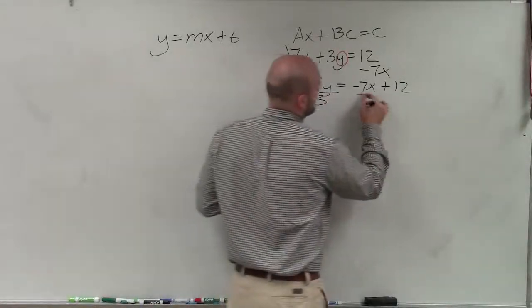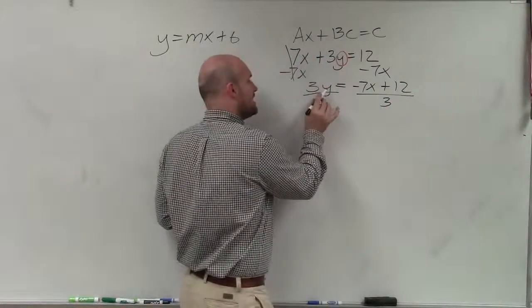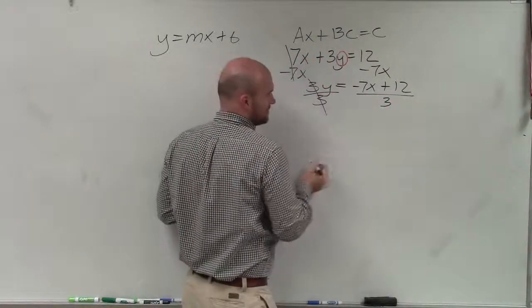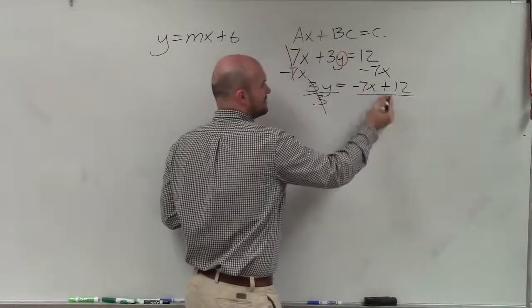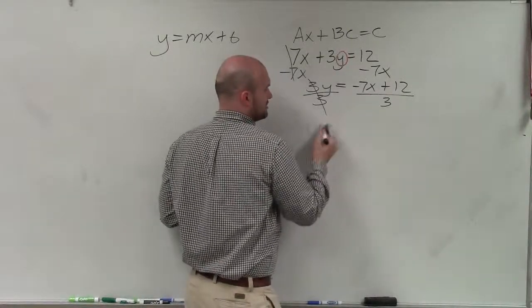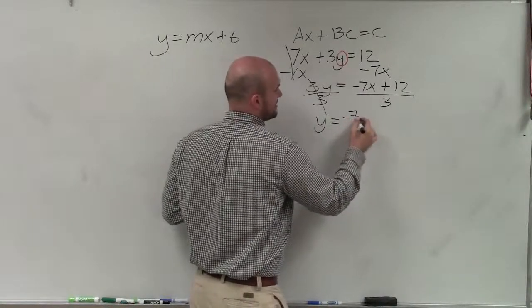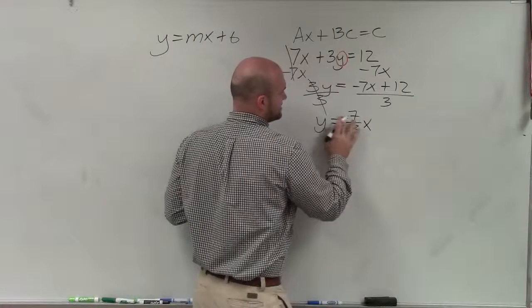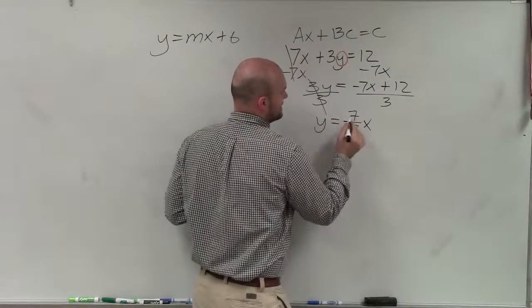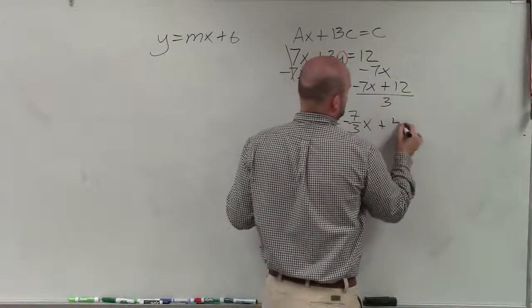Then I'll divide by 3. And remember, when we're dividing, my variable is multiplied by 3, so I divide by 3. This 3 has to divide into both these terms. Then I have y equals negative 7 thirds x, and it doesn't really matter where the negative sign is, plus 12 divided by 3 is 4.